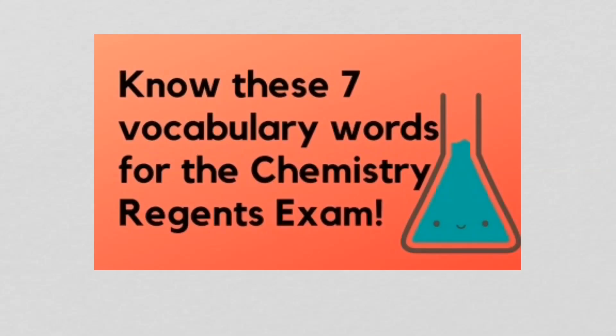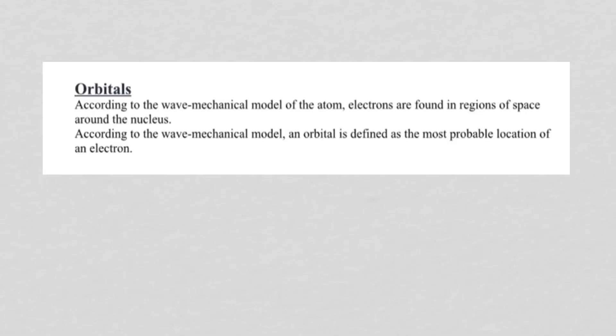In this video, we are going to count down the seven vocabulary words you must know for the Chemistry Regents exam. Let's get started. Number one: orbitals. You need to know what the word orbitals means. These sentences about orbitals come directly from Regents exams.